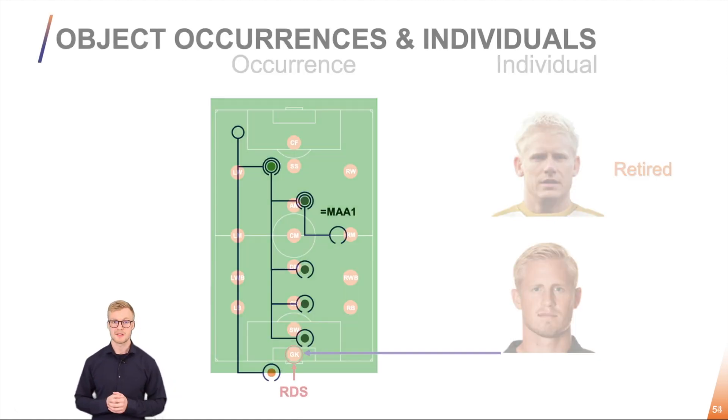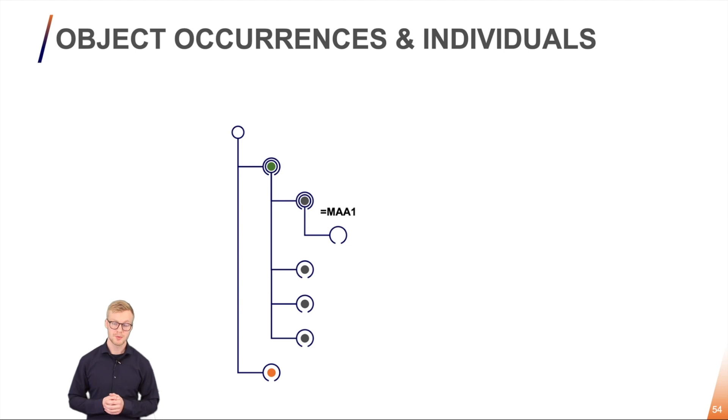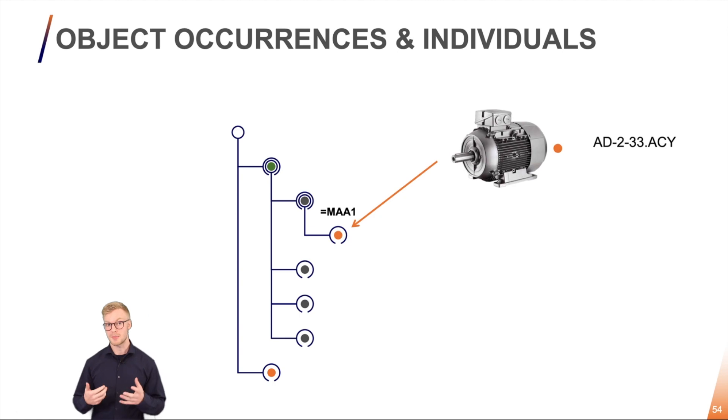Another example here we have a system breakdown and at some point here we will find our motor, equal MAA1. This is the occurrence of the motor. We can then take an individual and put it in on its place. So here we have an individual with a supplier number and that will fulfill the role of a motor.